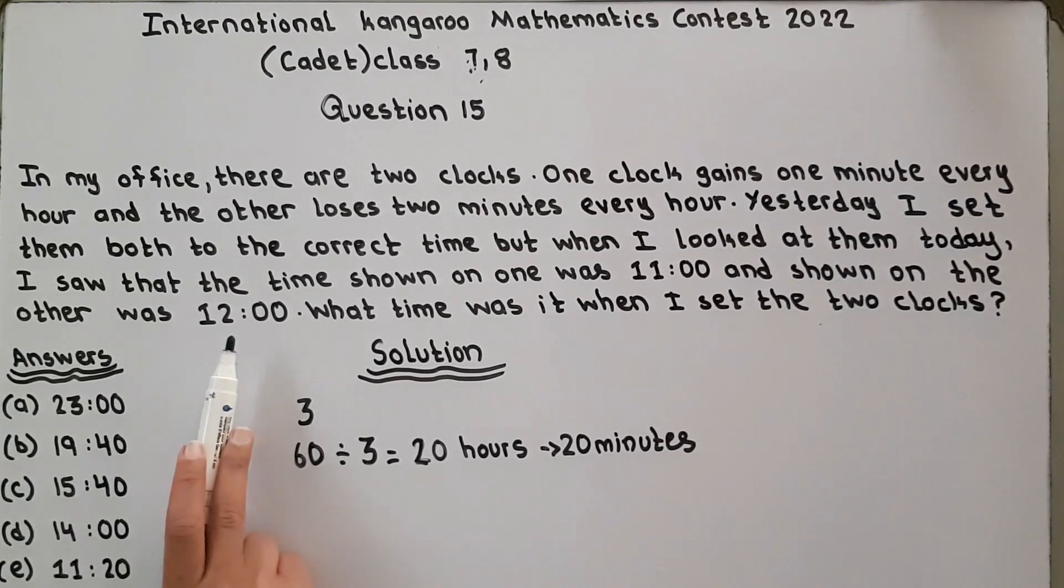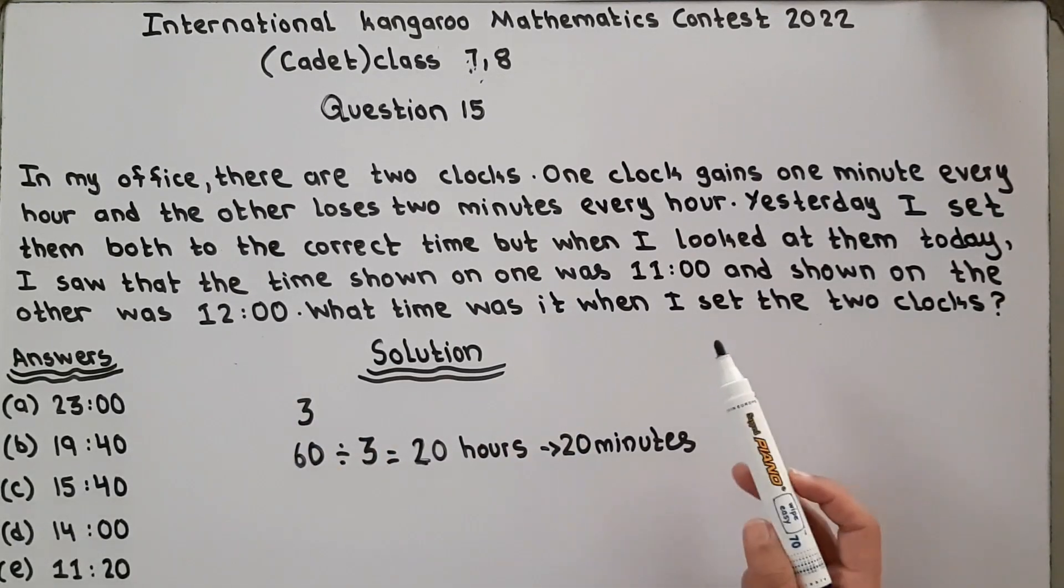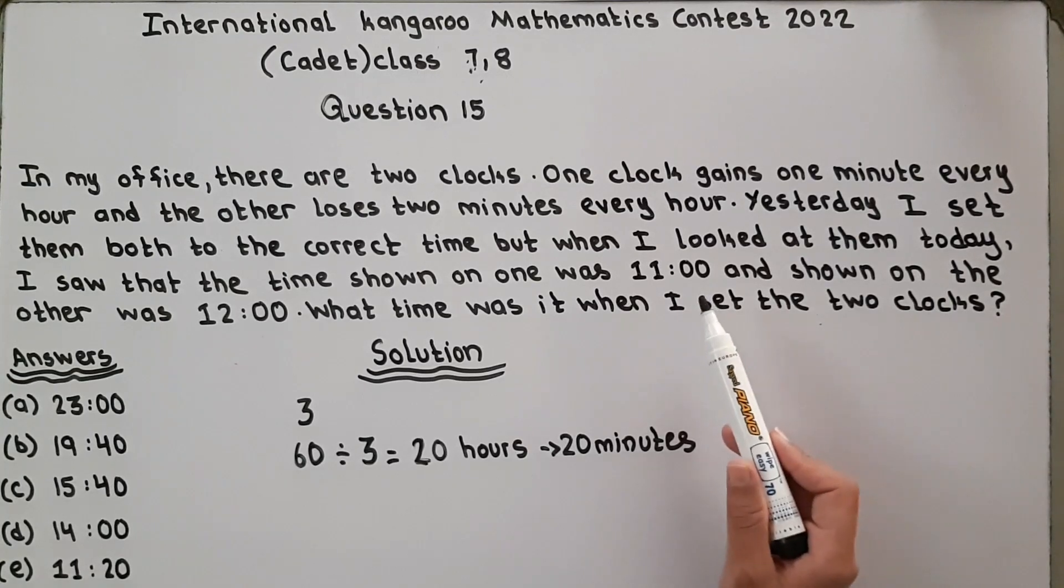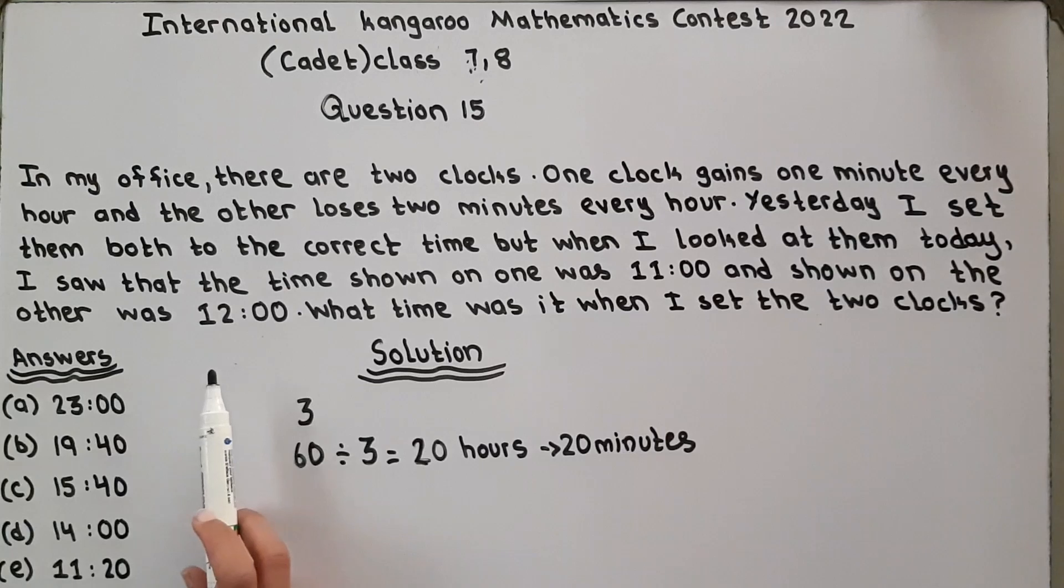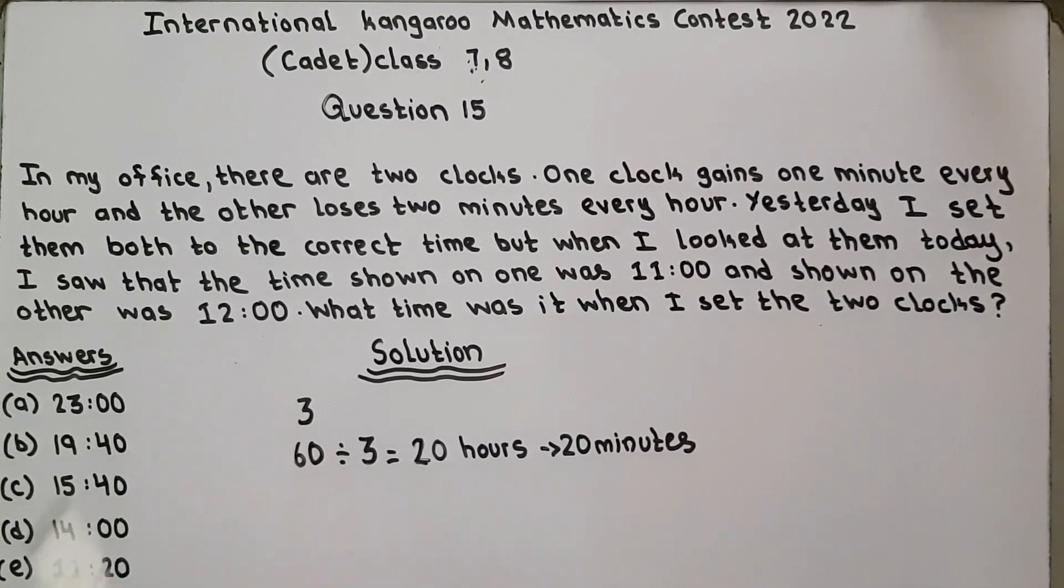Now we will look at the clock which gains one minute every hour. The time shown on that is 12:00. We'll use this clock to work backwards. So 12 is the time shown.